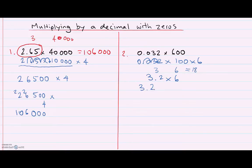3.2 times 6. 2 times 6 is 12, so put the 2 down, carry the 1. And 6 times 3 is 18, plus one more is 19.